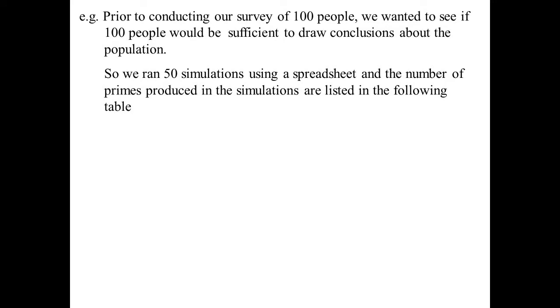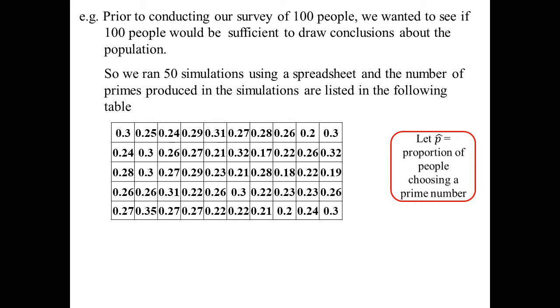Prior to conducting that survey of 100 people, I wanted to see if 100 would actually be a big enough sample to draw conclusions about the overall population. Sometimes you might do this rather than wasting time. Like if it's not going to be a good sample, then I might rethink it and go, well maybe I need to sample more people. So we end up running 50 simulations using a spreadsheet, and the number of primes produced in the simulations are in the table. Now p hat, that's going to equal the proportion of people choosing a prime number. And there's the results from the 50 simulations. Now remember we're expecting to get an answer of 0.25.